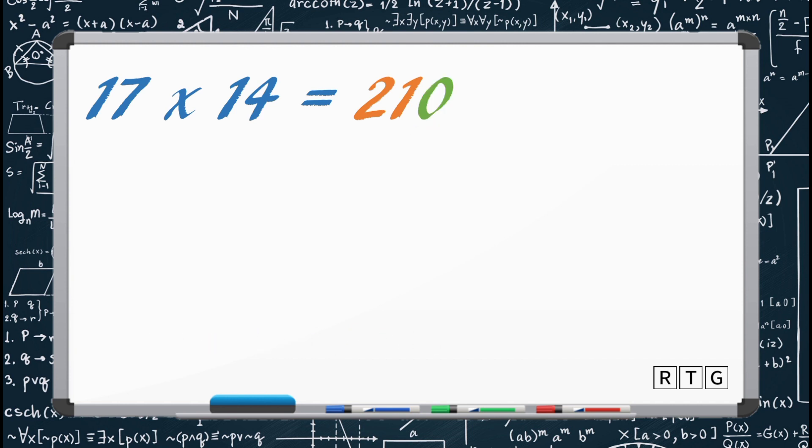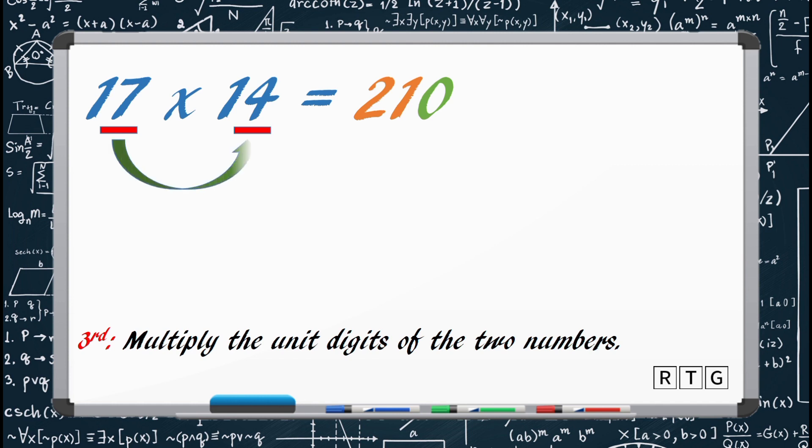For the third step, we only have to multiply the unit digits of the two numbers. The unit digit of 17 is 7, while the unit digit of 14 is 4. We need to multiply these two. 7 times 4 equals 28.